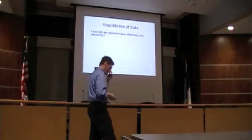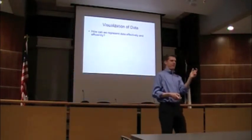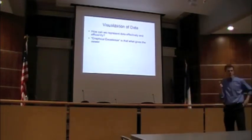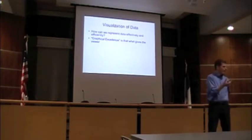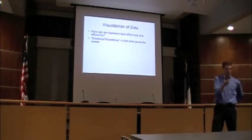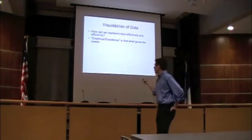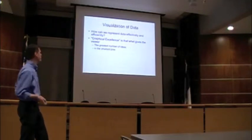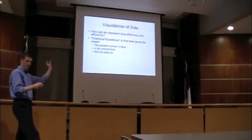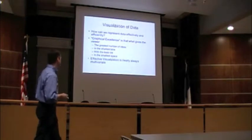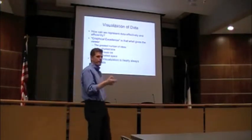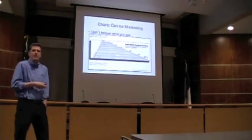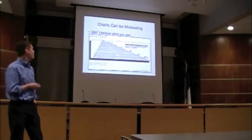The question I want to start with is: how do we represent data effectively? How do we visualize data? It's possible to represent data in a misleading way — we don't want to do that. We want to be true to our scientific approach. What's called graphical excellence gives the viewer the greatest number of ideas from the data in a short time, with the least amount of ink or pixels in a small space. It's almost always multivariate in nature and requires telling the truth.